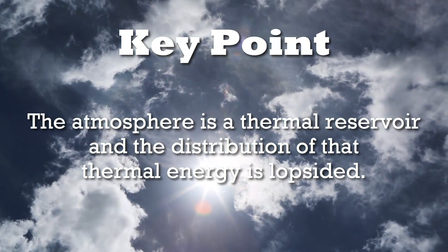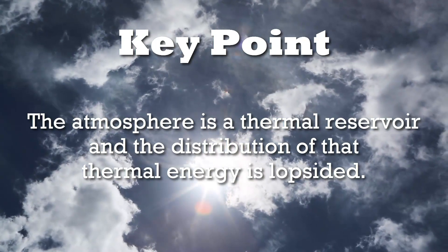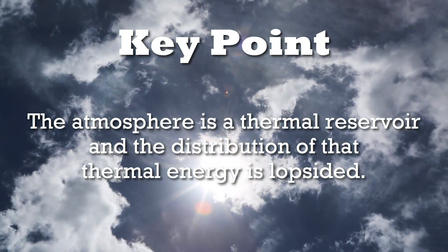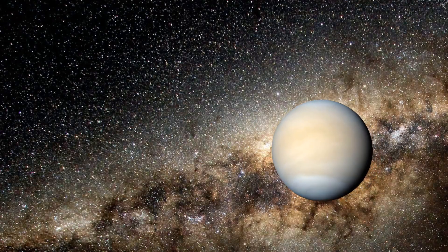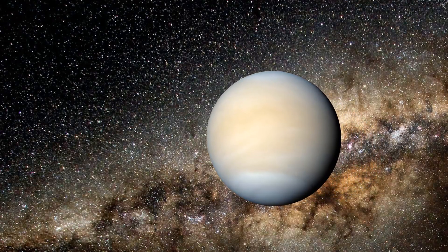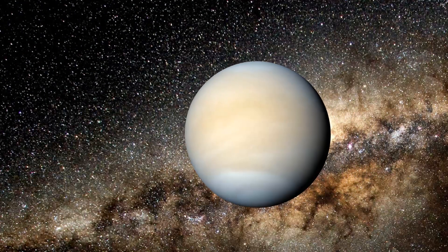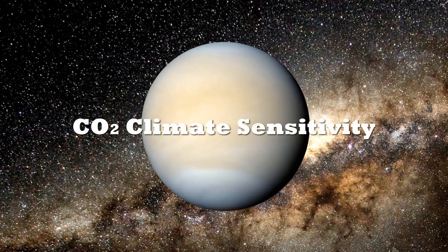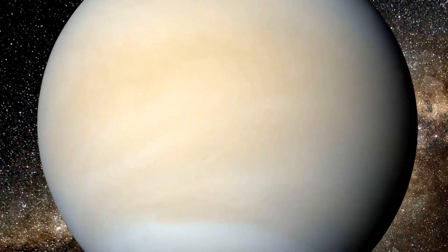Does the greenhouse effect still exist? Of course it does — all matter absorbs and emits electromagnetic radiation. Does it affect the surface temperature of a planet? Perhaps, and perhaps not. We don't know. The effect is tiny if it exists at all.